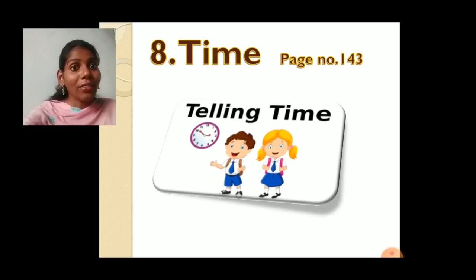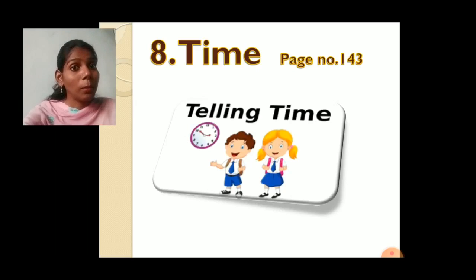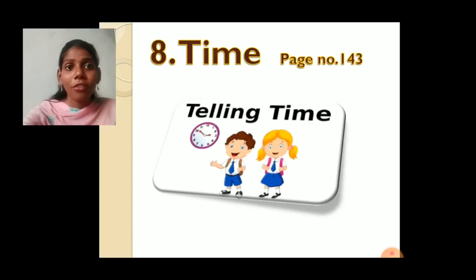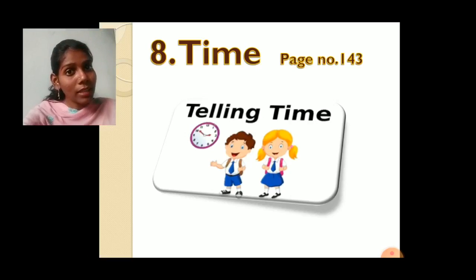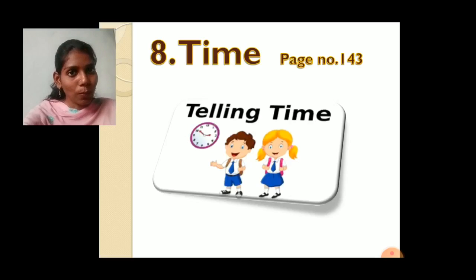Now today I will teach you quarter to. Quarter to means when the minute hand is at number 9. So it shows how many minutes? 9 fives are 45. So it shows 45 minutes and it is called quarter to.